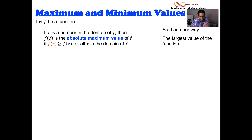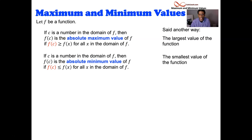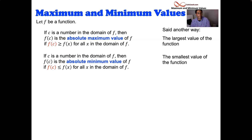We're going to flip that for the minimum — it'll be the smallest the function ever gets. The f of c, the y value, is less than or equal to f of x for all other x in the domain. So those are absolute maximum values and absolute minimum values. Sometimes you might see the word global in place of absolute.